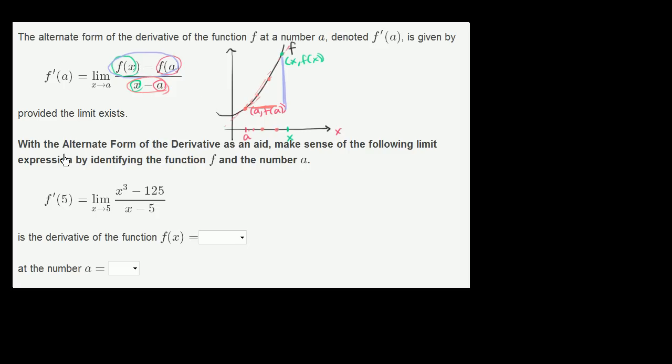So with all that out of the way, let's try to answer their question. With the alternative form of the derivative as an aid, make sense of the following limit expression by identifying the function f and the number a. So right here, they want to find the slope of the tangent line at 5. It's pretty clear that a is equal to 5, and that f of a is equal to 125.